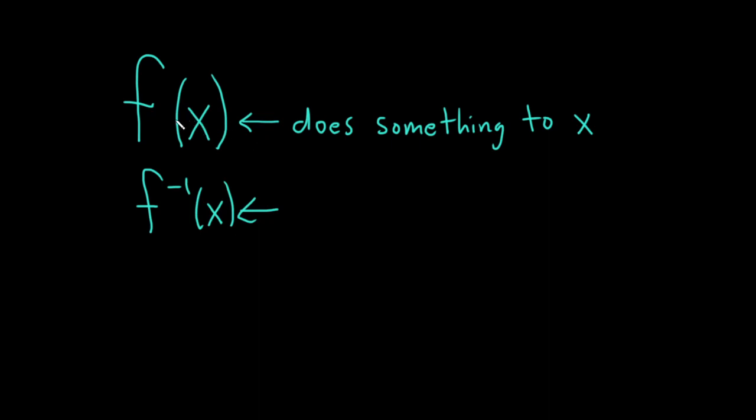basically this undoes what your function up here does to x. So for example, if f tells x to put on its shoes, the inverse function would tell x to take them off. So it's just basically like the opposite. This undoes what f did to x.